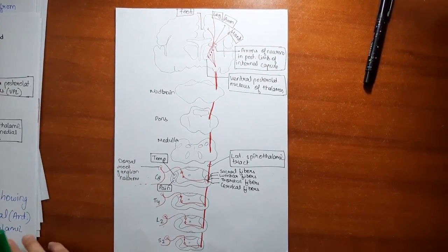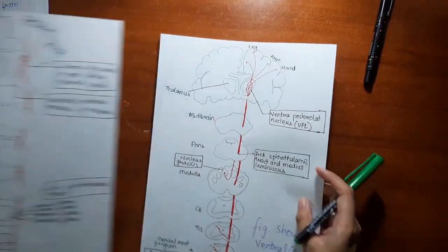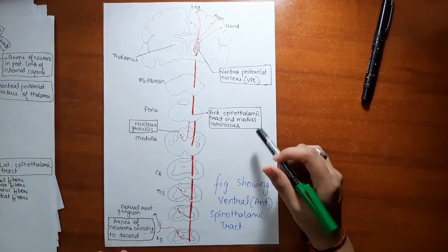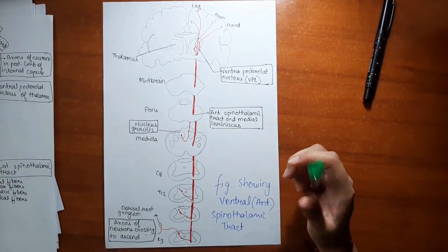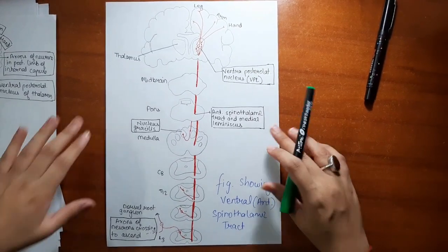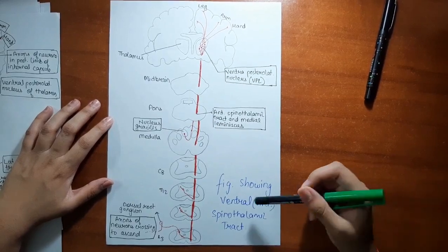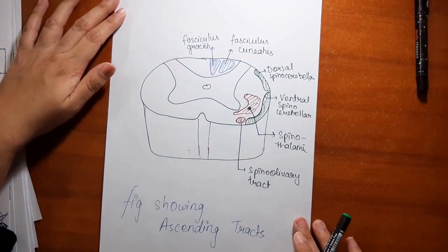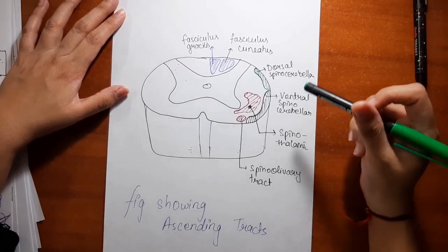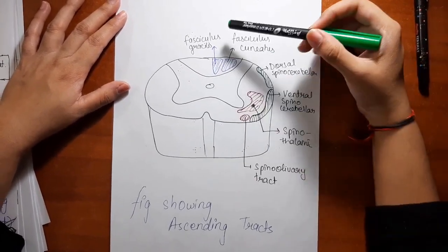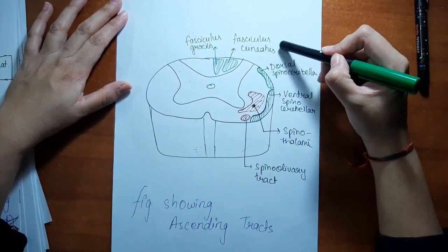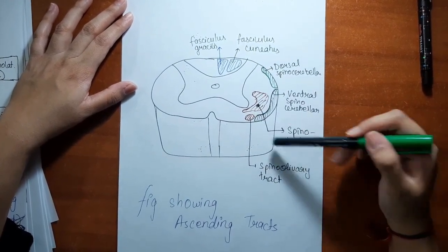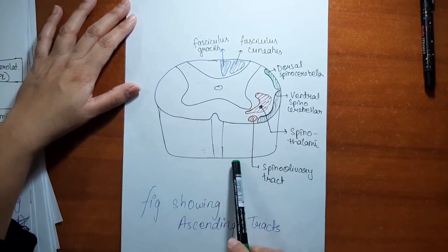The ventral spinothalamic tract carries crude touch and pressure, and lesions lead to loss of these sensations on the opposite side of the body below the level of lesion. A compiled diagram shows all major ascending tracts: the posterior column with fasciculus gracilis and fasciculus cuneatus, the dorsal spinocerebellar tract, the ventral spinocerebellar tract, the lateral and ventral spinothalamic tracts, and the spino-olivary tract.